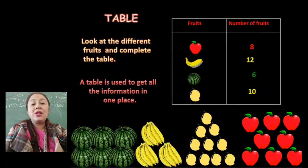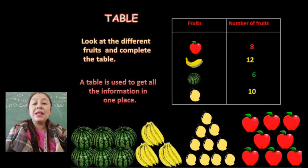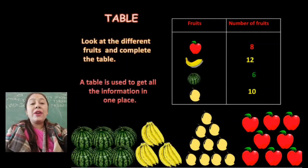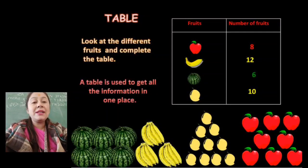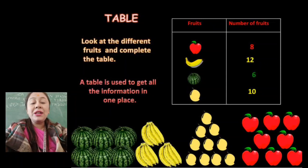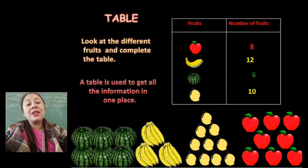In Smart Charts, you will be given different things and you need to put those things in a table. From that table, you can answer the questions and look at the differences in their numbers. A table is used to get information in one place. In Smart Charts, we will use different tables where we will get different information from one table.